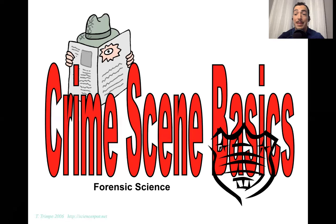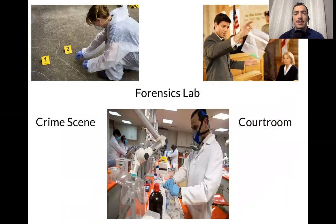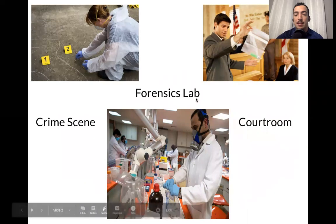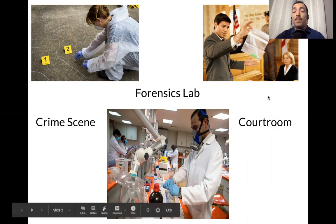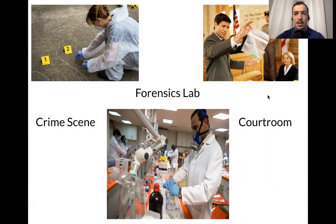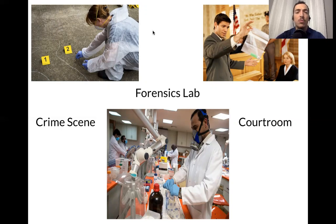So today we're going to be talking about crime scene basics. In our first lesson, we talked about the three settings of forensic science. I broke it down to just three settings: one being the crime scene, the second one being the forensics lab — where a lot of the actual science application in forensic science is done — and the third setting being the courtroom, where lawyers, judges, and juries come into play. We'll cover the forensic lab and the courtroom later, but today we're going to focus on the actual crime scene.